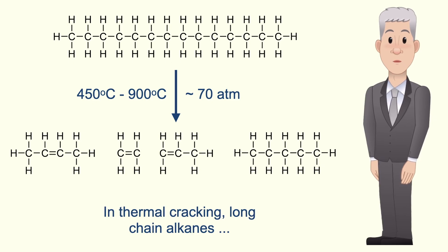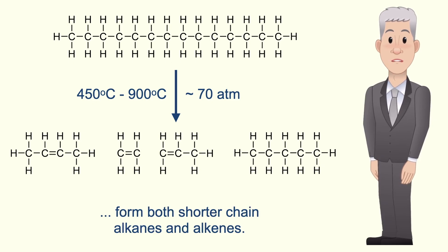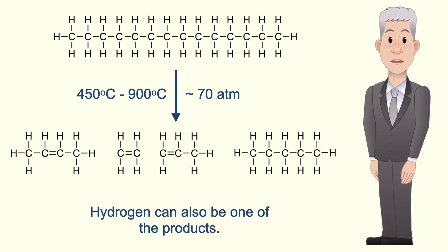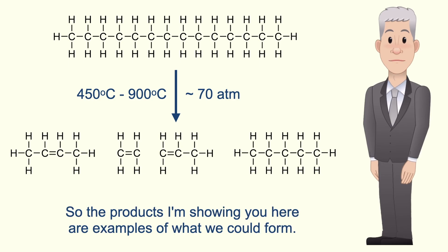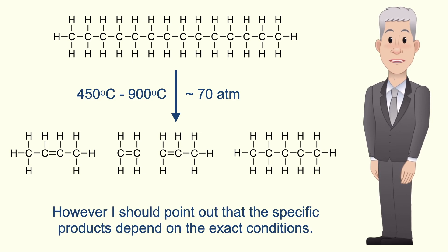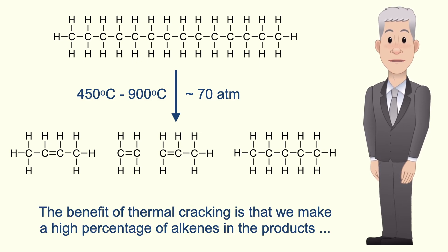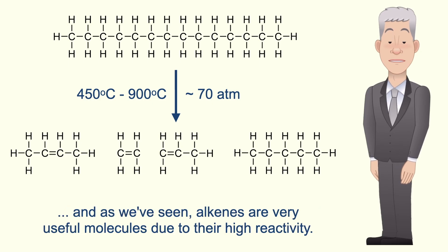In thermal cracking, long chain alkanes form both shorter chain alkanes and alkenes, and hydrogen can also be one of the products. The products shown are examples of what could form; however, the specific products depend on the exact conditions. The benefit of thermal cracking is that we make a high percentage of alkenes in the products, and as we've seen alkenes are very useful molecules due to their high reactivity.